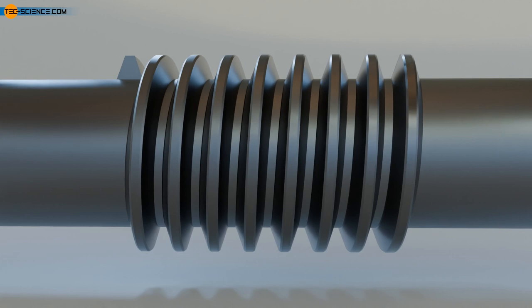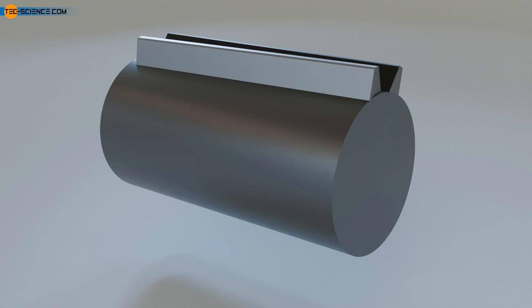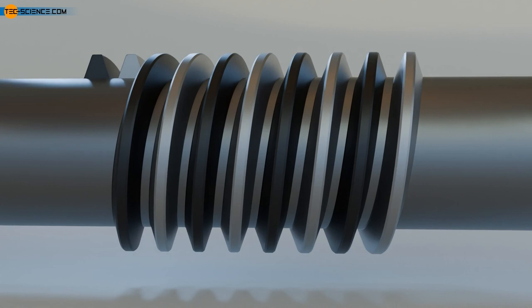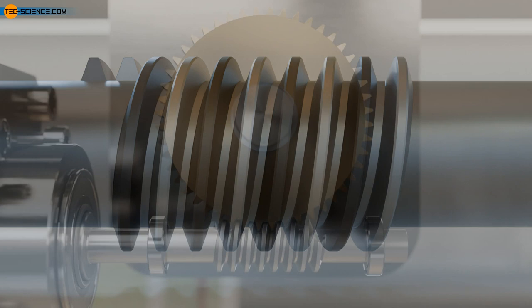It is also possible to imagine that instead of one tooth, two or more teeth are wrapped around the cylindrical gear at the same time. In this case, the result is a double-toothed worm. The number of teeth on a worm is also referred to as the number of starts. Therefore, one also speaks of a single, double, or multi-start worm.